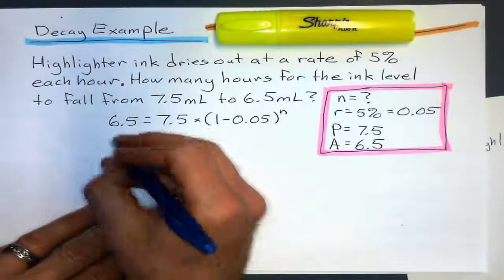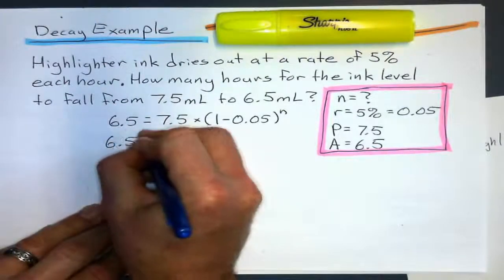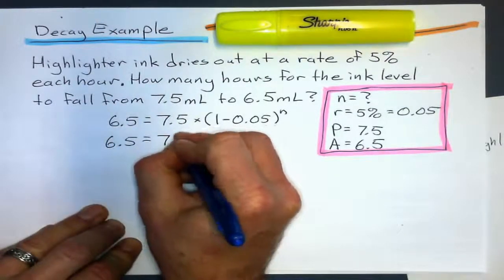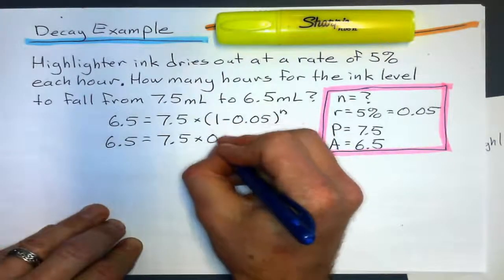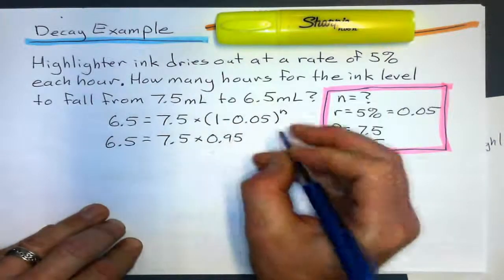0.05 to the power of N. This time, N is hours. Let's clean that up a little bit. And 1 minus 0.05 is 0.95. Of course it is.